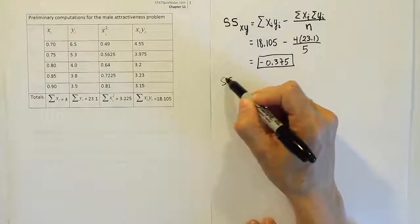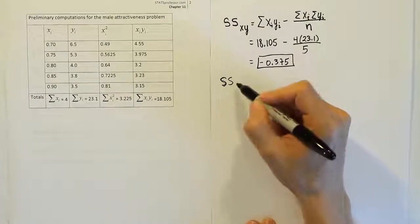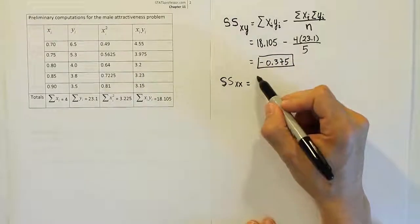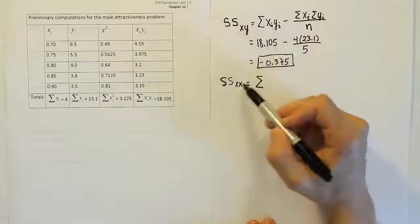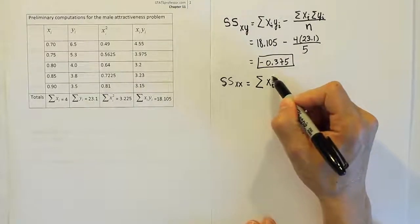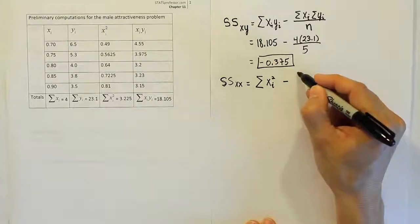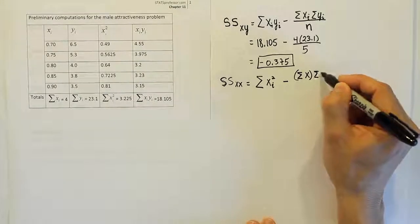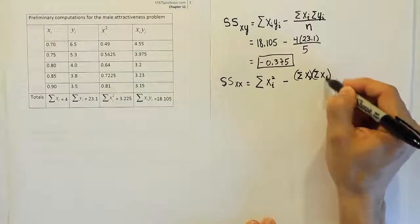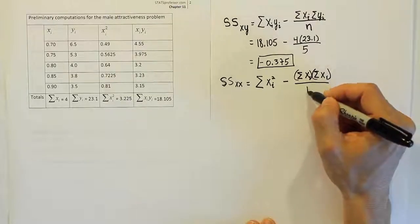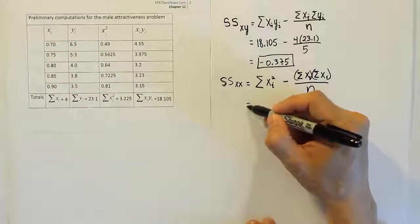Let's go on then. We're looking at the sum of square for xx. Following the same pattern, it's going to be the sum of, since it's xx, it'll be xi squared, minus the summation of x times the summation of x, which is the same as saying it's squared, divided by n. Let's put in the numbers then.